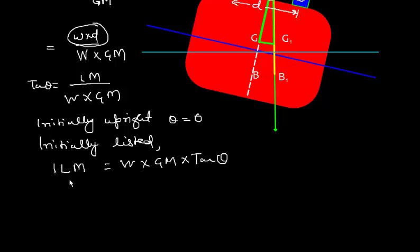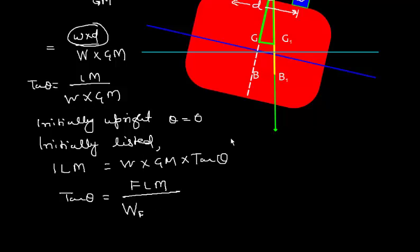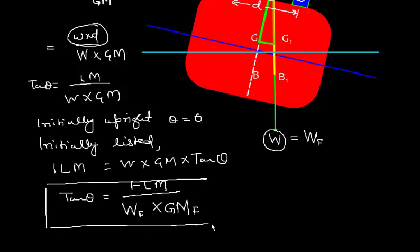For the final list, suppose the final list angle is theta. We can write: tan θ = FLM (final list moment) / (Wf × GMf), where Wf is the final displacement and GMf is the final GM. This is a very important relationship that we will be using very frequently, especially in cases of loading or discharging where the final weight changes.